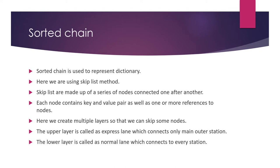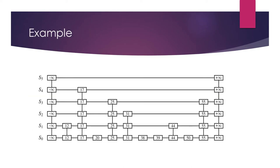Skip lists are made up of a series of nodes connected one after another. Each node contains a key and value pair, as well as one or more references to other nodes. We can create multiple layers so that we can skip some nodes. The upper layer is called the express lane and the lower layer is called the normal lane.